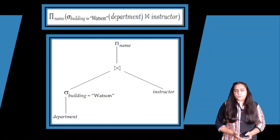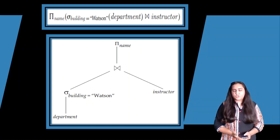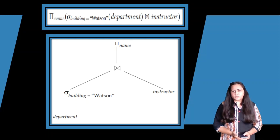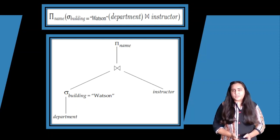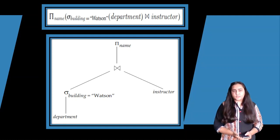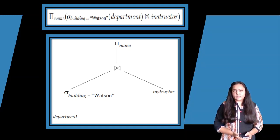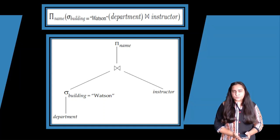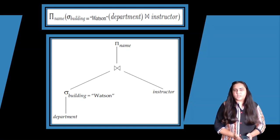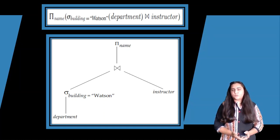In the bottom-most part we have department, from which I have applied the sigma operation and taken out all departments that belong to the building Watson. Then the join is taken between the result of all departments belonging to Watson building and all instructors. Once the natural join is taken, the pi-name operator is used to get only the name column. I'm not going to show the table contents, as you don't need that to understand what this query says and means.